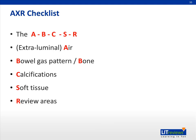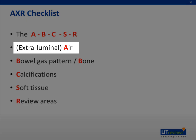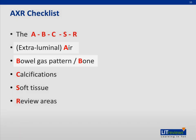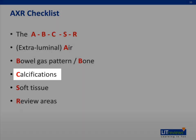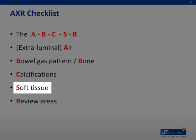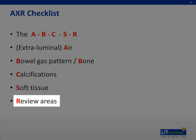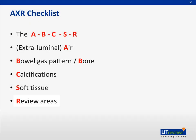Here is an example of a checklist you may want to use: the ABCSR checklist. A stands for air, including extra-luminal air. B for bowel gas pattern and bones. C for calcifications. S for soft tissue shadows. And lastly, R for review areas. With this, you should be able to approach any abdominal radiograph you encounter.